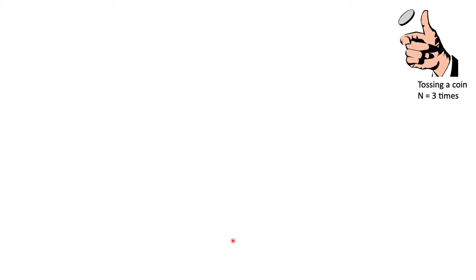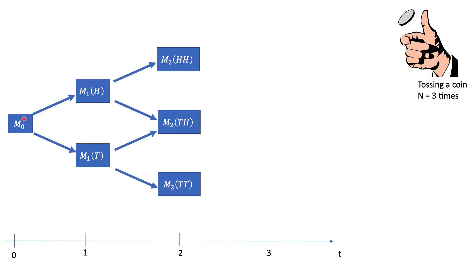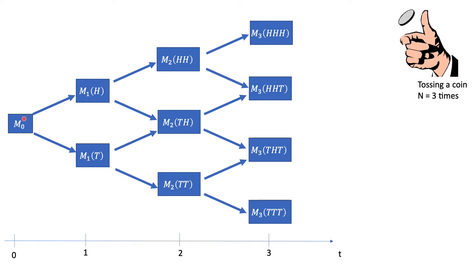Let's look at an example. Imagine we're in the multi-period binomial asset pricing model and we're tossing the coin three times. We have our timeline here — every time we toss the coin we move on. At time M0 we know the value of M0. If we toss the coin and get heads we go up, or we go down, and we can repeat this process for the second and third coin toss. This is an adapted stochastic process.